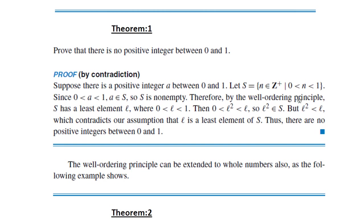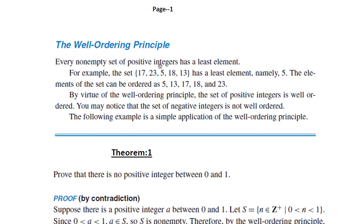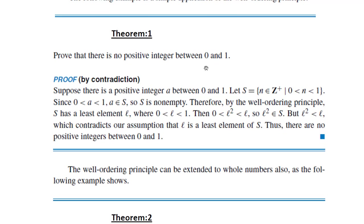Therefore, by the Well-Ordering Principle, since S is a non-empty set of positive integers, S has a least element — call it 'l' — where 0 < l < 1. Now multiplying this inequality by l, we get l² < l. Since 0 < l² < 1 and l² is a positive integer, l² also belongs to S. But l² < l, which contradicts our assumption that l is the least element of S.